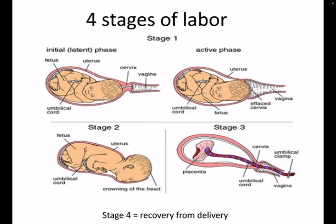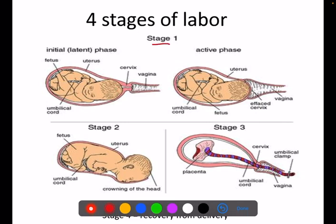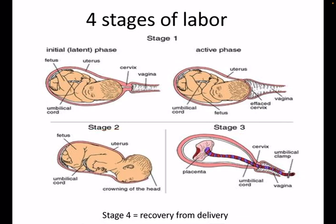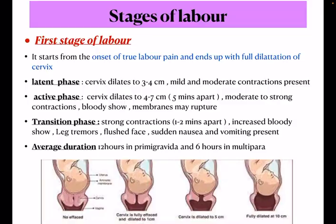Next, stages of labor. We have mainly four stages of labor. Previously three stages were described, but now the fourth stage — the observation stage — is also included. So we have four stages: stage one, stage two, stage three, and stage four, which is the recovery from delivery.